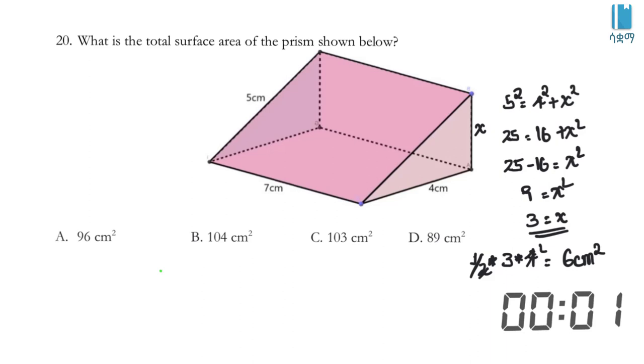For the rectangle, we calculate area as base times height. This rectangular face is 7 times 4, which equals 28 cm².